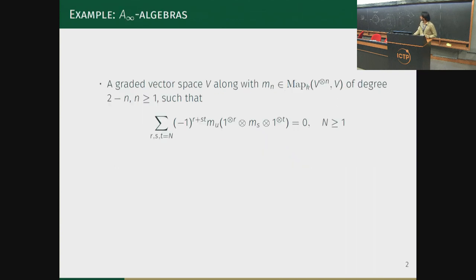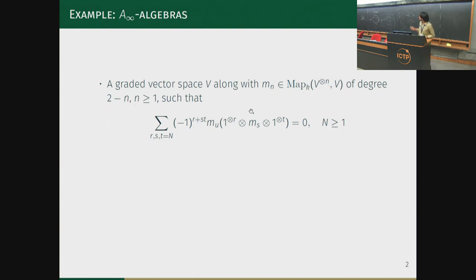Let me illustrate this with the example of A-infinity algebras. An A-infinity algebra is the data of a vector space V along with maps m_n from V⊗n to V of degree 2−n, such that a collection of equations are satisfied which encode the homotopy coherent associativity of the multiplication.